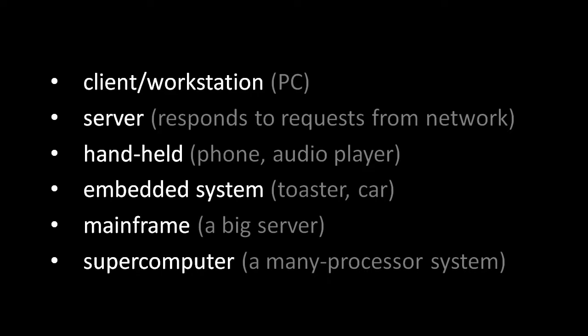Handheld systems, like smartphones, and embedded systems, like your car's computer, are also comprised of the CPU, memory, and I/O devices. The distinction is mainly in the form factor — the size and shape of the encasing — and also in the performance needs. For example, your toaster doesn't need much processing power, and your smartphone needs power efficiency much more than your desktop PC.